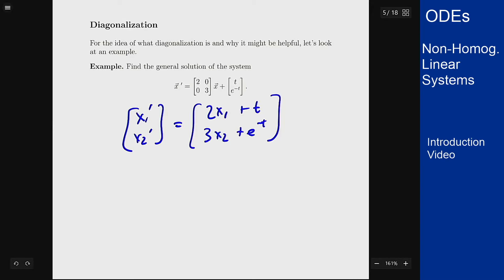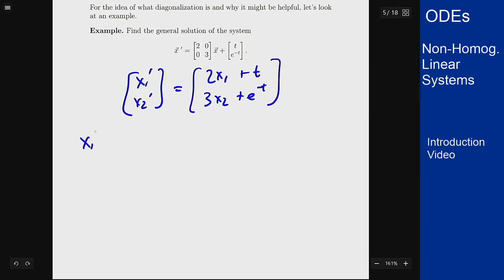So really what I have here is two completely separate differential equations: x₁' = 2x₁ + t and x₂' = 3x₂ + e^(-t).